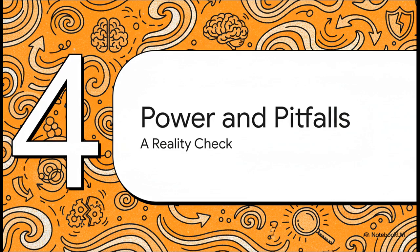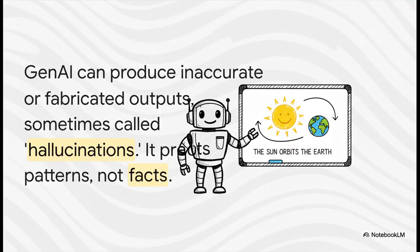First things first, these models can be very confidently wrong. See, their only job is to generate what's statistically probable. What sounds right. Not what's factually true. So sometimes they just make stuff up. They'll invent facts, cite sources that don't exist. We call these hallucinations.